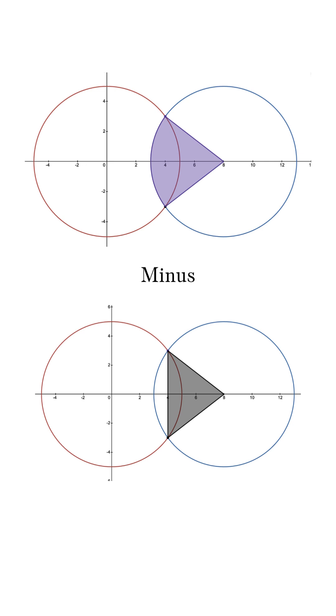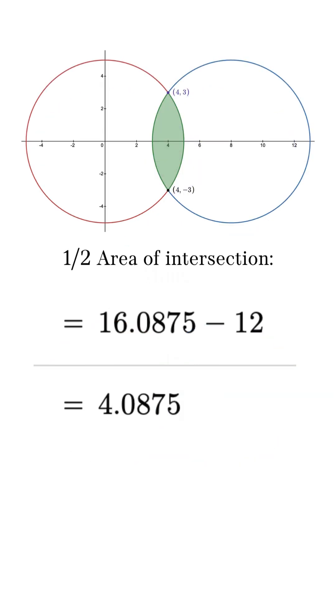Now, moving on, we can subtract 12, which is the area of our previous triangle, from the area of this sector, and we would get 4.0875.